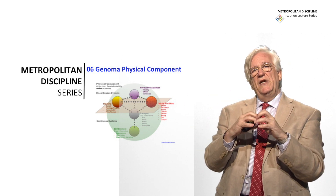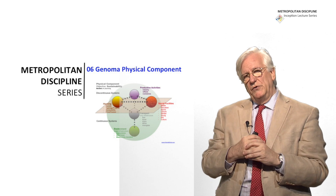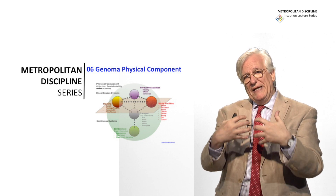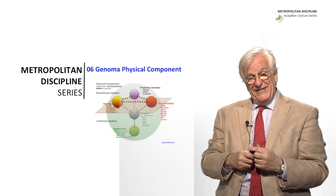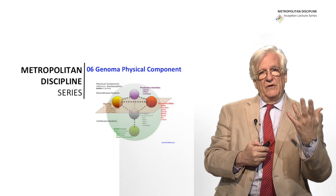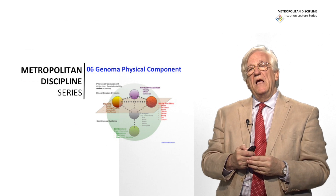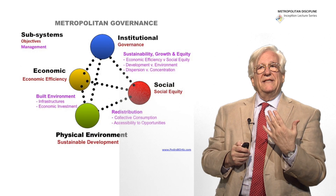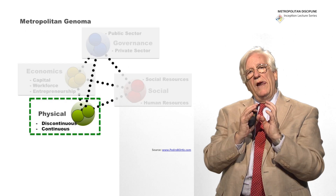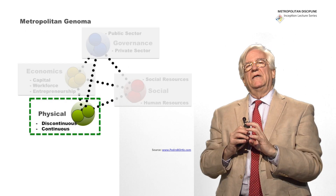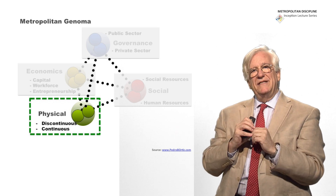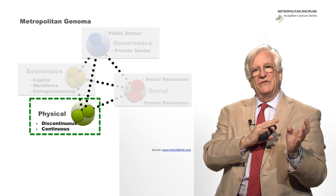So this is really, out of the four components of the genoma, the one that opens the door to the physical planning and to the investments in the metropolis. And that's why it is the fourth one out of this series. In that component, we have mainly two sets of systems: the continuous systems and the discontinuous systems.